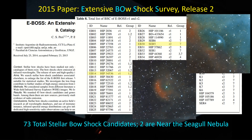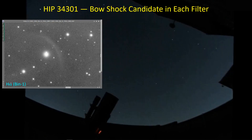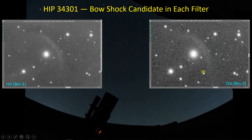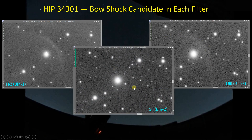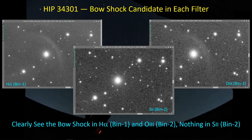They've concluded that HIP 34301 is a likely bow shock candidate. It's very interesting that out of the 73 stars with bow shock features, two of them are actually in the field of view of this Seagull Nebula image. This is the stacked HA data in BIN 1, and you can see HIP 34301 right here with the bow shock forming a parabola-like curve. In Oxygen 3 you can also see that feature, though less clearly since I'm using BIN 2 with fewer hours. In the Sulfur 2 data, I don't see anything — I can clearly see the bow shock in Hydrogen Alpha and Oxygen, but not Sulfur.